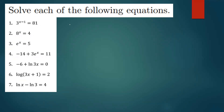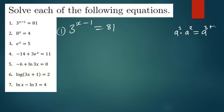So the first question is 3^(x-1) = 81. Whenever you're dealing with exponential functions, if you are multiplying numbers with the same base — multiplying two indices with the same base — you have to add the powers. So if you're multiplying, you are adding the powers.